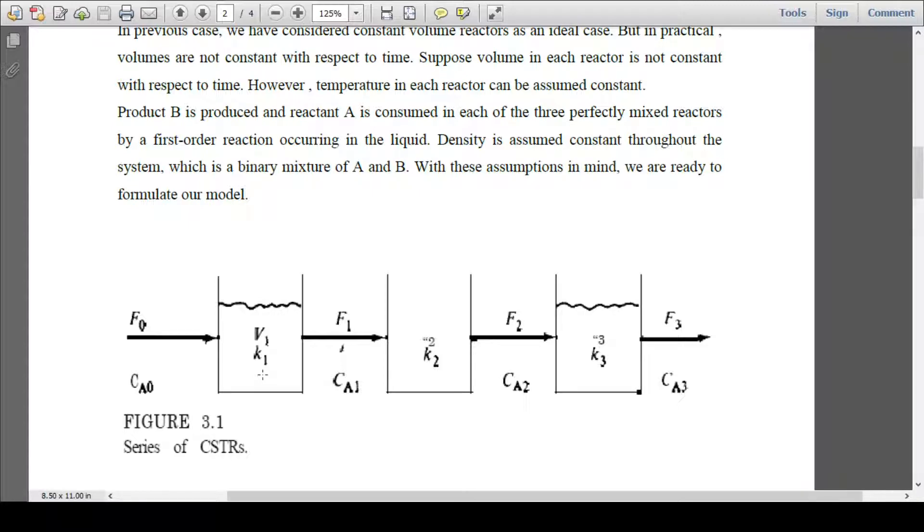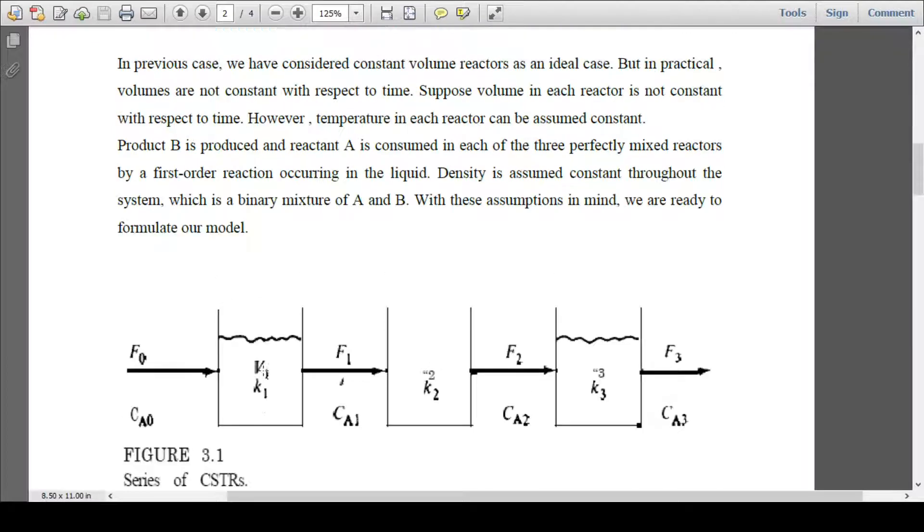Then this product is again being charged, F2 Ca2, to reactor 3, and the product is being withdrawn as F3 and Ca3.